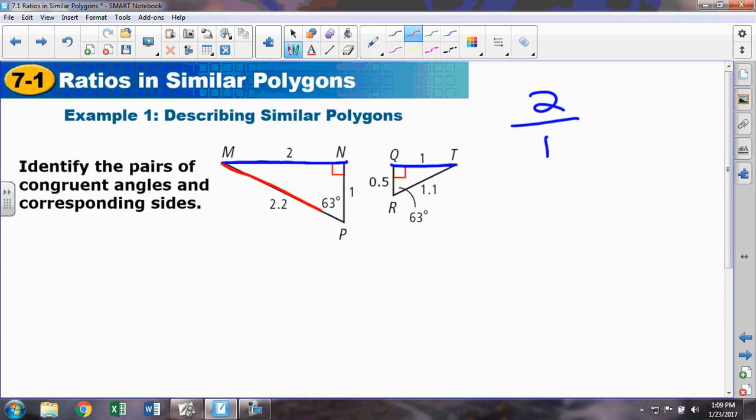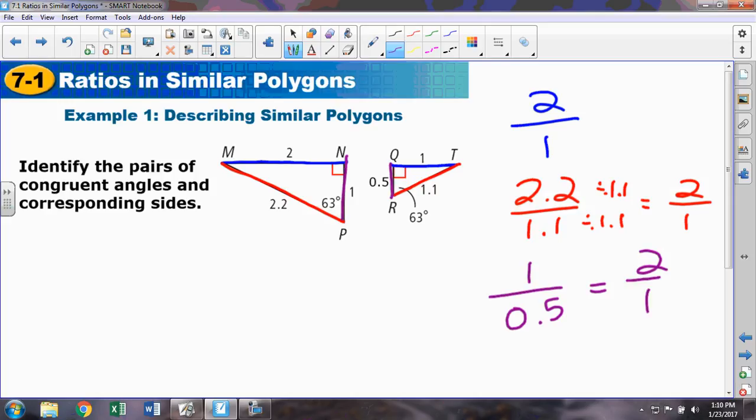If we take the long side and the long side, well, if we just simplify that ratio, it's 2 to 1. And if we take short side with short side, likewise, that's the ratio 2 to 1. In order to have similar figures, every single pair of corresponding sides will always have the exact same similarity ratio.